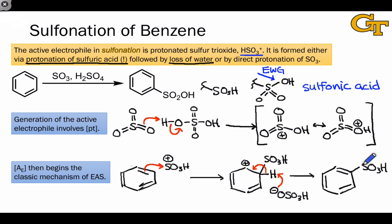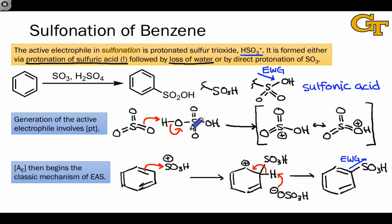Finally, let's address whether we would expect the product to react further. As noted, the sulfonic acid group is a strong electron-withdrawing group, meaning the ring is relatively electron-poor. This means it is deactivated with respect to electrophilic aromatic substitution, especially relative to benzene itself. We should expect the product to be far less reactive than benzene in EAS, where the ring is expected to act as a nucleophile — so polysubstitution is not expected to be a significant issue.